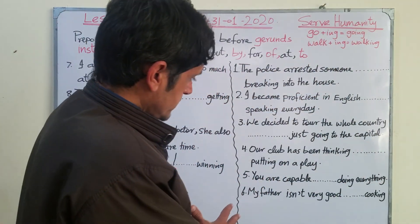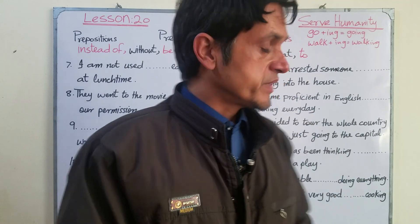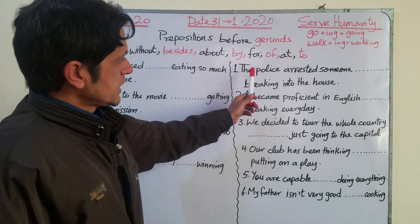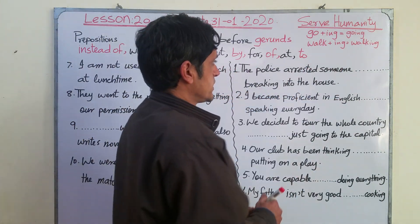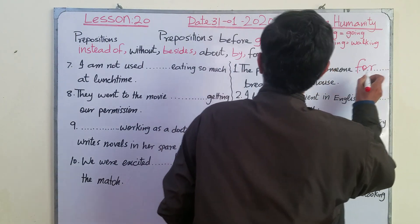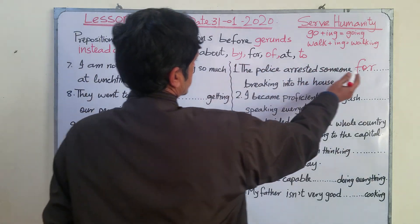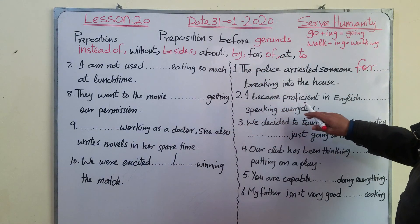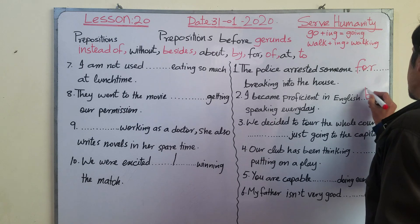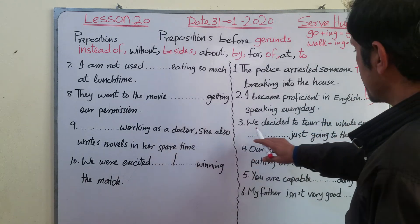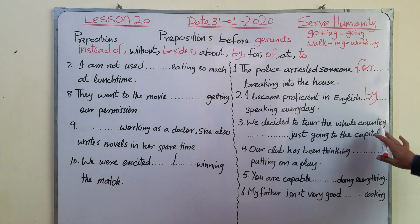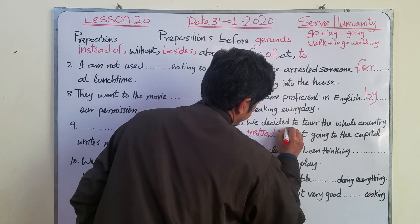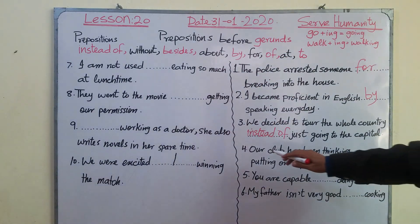Now stop the video, complete the blanks, then check your answers. Here are the answers: Number one — the police arrested someone FOR breaking into the house. Number two — I became proficient in English BY speaking every day. Number three — we decided to tour the whole country INSTEAD OF just going to the capital.